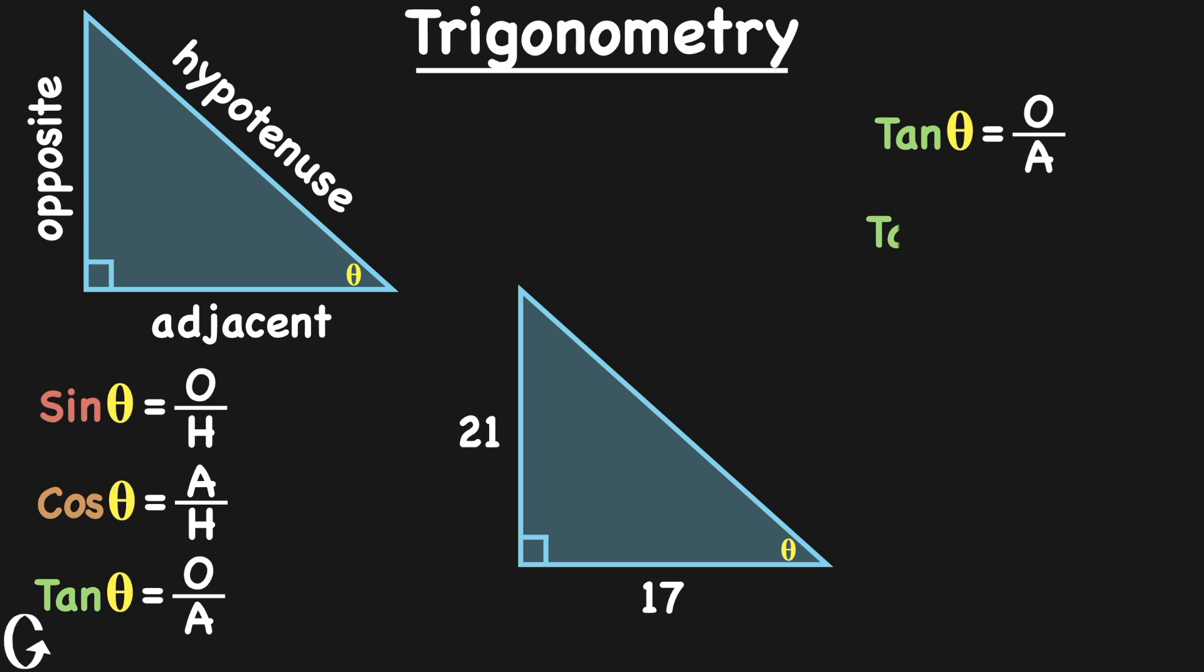The next step will be to plug in 21 for the opposite side and 17 for the adjacent side. And now we realize we have to get rid of the tangent function on the left, since we need to solve for theta and only theta. Therefore, we will take the inverse tan of the left side. And remember, whatever you do to one side of a math equation, you need to do to the other side as well. And thus, we need to take the inverse tan of the right-hand side. The inverse tan cancels the tan function on the left, and that leaves us with just theta and only theta. Next, we need to plug in inverse tan of 21 over 17 into our calculator, and voila. There you have it. We get an answer of 51 degrees. So that means that this angle theta is 51 degrees.